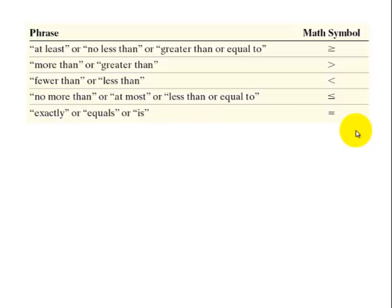In this slide, here's some common terms for math symbols. At least is the same thing as saying greater than or equal to. More than is the same thing as saying greater than. Fewer than is the same thing as saying less than. No more, or at most, is the same thing as saying less than or equal to.